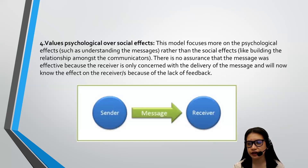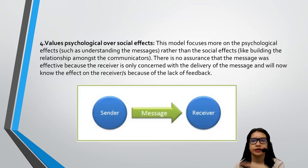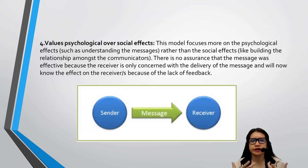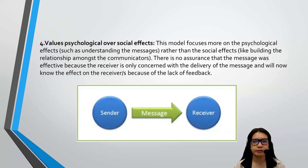Fourth, it values psychological over social effects. This model focuses more on psychological effects such as understanding of the message rather than social effects like building relationships among communicators. Since it's one-way, the sender gives a message to the receiver and that's it. It doesn't build any relationship because the receiver cannot share feedback, so there is no assurance that the message was effective.